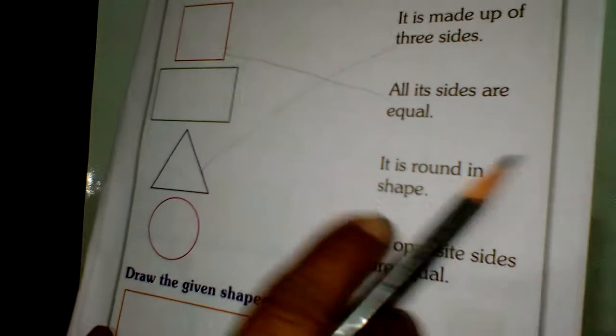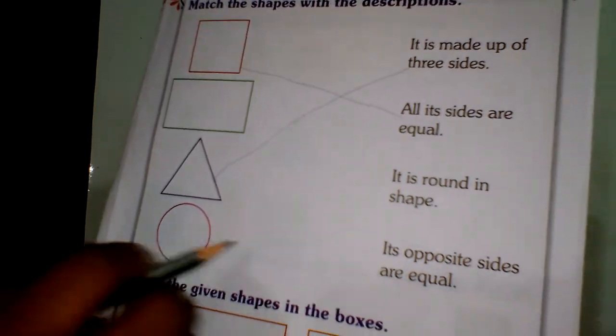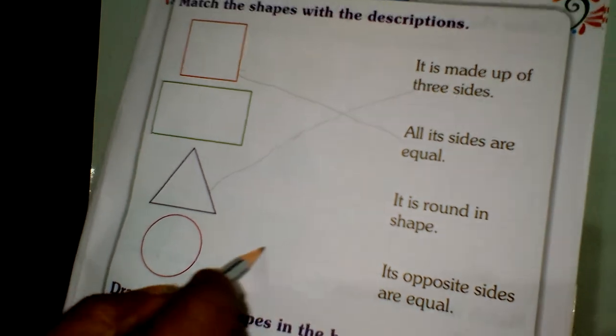Next, it is round in shape. This is the circle. Draw the line.